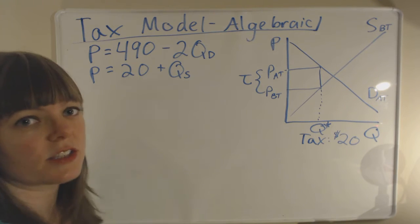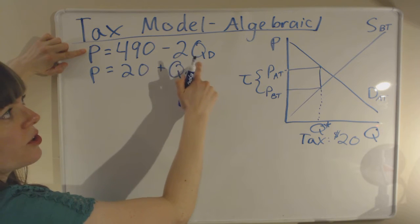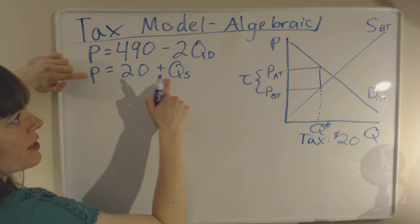So let's do this algebraically. So you're given a demand curve, price equals 490 minus 2QD, quantity demanded, and a supply curve, price equals 20 plus QS.